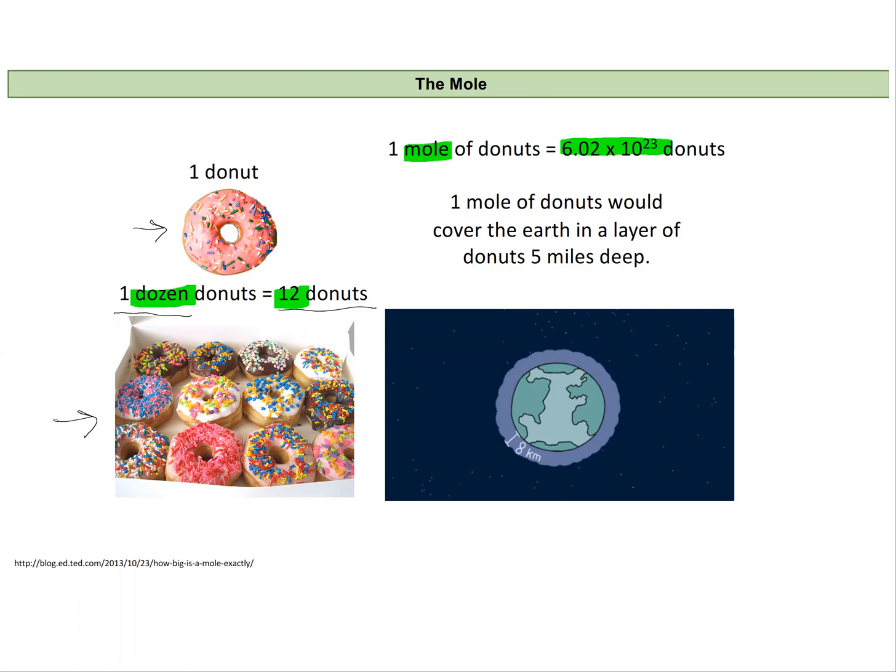So if I have one donut I can also have a dozen donuts which is 12, and if I have a mole of donuts I'll have 6.02 times 10 to the 23rd donuts. And so that's a lot. If I had an actual mole of donuts it would cover the earth in a layer of donuts five miles deep or eight kilometers, which is absurdly huge.